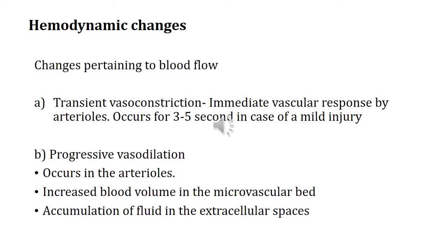Hemodynamic changes are the changes pertaining to blood flow. The first step is transient vasoconstriction, which occurs in response to mild injury and lasts for about 3 to 5 seconds. After that you have progressive vasodilation, which is the second step of hemodynamic change. This mainly occurs in the arterioles, and there is an increased volume of blood in the microvascular bed. The flow of blood in this region is slowed due to high viscosity.